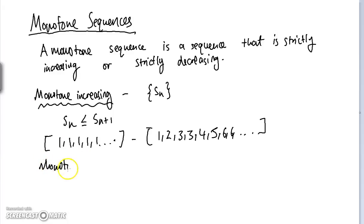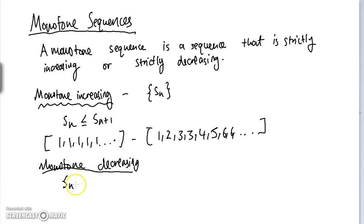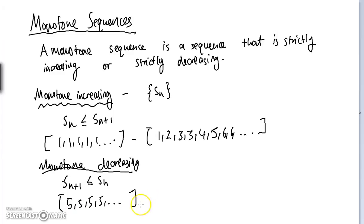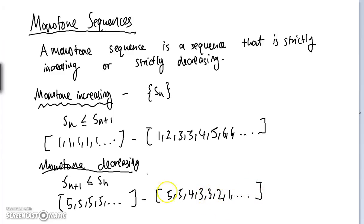For a monotone decreasing sequence, the next term of the sequence is always less than or equal to the previous term of the sequence. A constant sequence is both monotone decreasing and monotone increasing, but it also includes sequences which are genuinely getting smaller as terms progress.